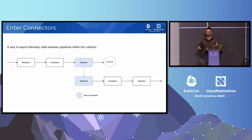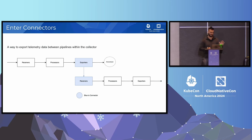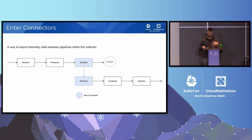So enter connectors. I'm going to give a 30-second overview of connectors, but I'm going to be barely scratching the surface. I think there was a very good talk on connectors at last year's KubeCon, so if you're interested, definitely give that one a listen. For our purposes, connectors are just a way to connect multiple pipelines in a single collector. So traditionally, data enters the collector through a receiver, goes through the processor pipeline, and exits the collector through an exporter. But instead of having data exit the collector through the exporter, you can actually have it consumed by essentially the start of another pipeline.